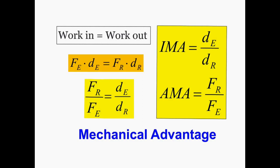If I only have the distances right here, I can get what is called the ideal mechanical advantage. It is called ideal because we are ignoring all outside forces. We are assuming the only forces will be the effort force and the resistance force.